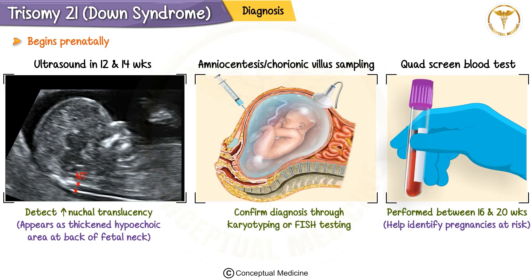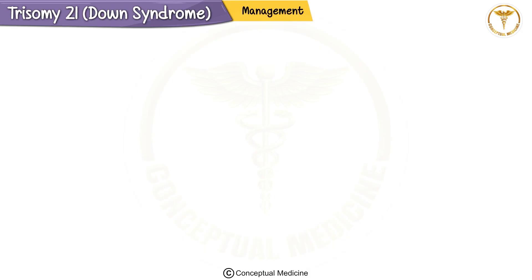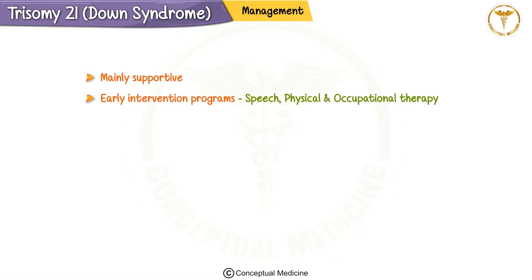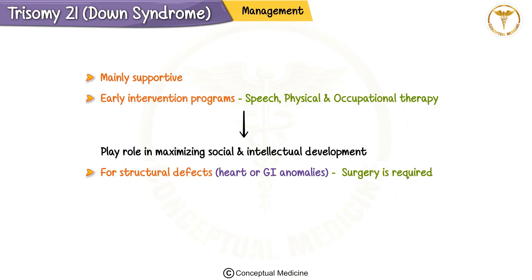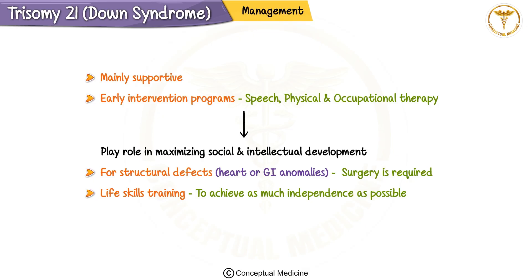A quad screen blood test performed between 16 and 20 weeks can also help identify pregnancies at risk. Finally, treatment is mainly supportive. Early intervention programs including speech therapy, physical therapy, and occupational therapy play a key role in maximizing social and intellectual development. For structural defects like heart or gastrointestinal anomalies, surgery is often required. Life skills training is essential for helping these individuals achieve as much independence as possible. With proper care and support, individuals with Down syndrome can lead fulfilling lives.